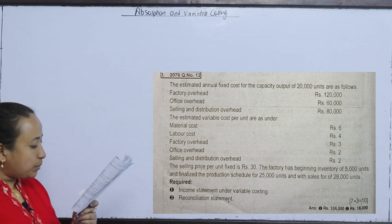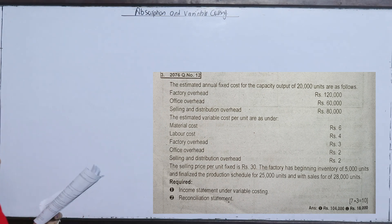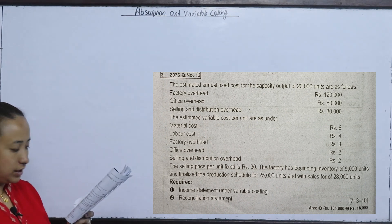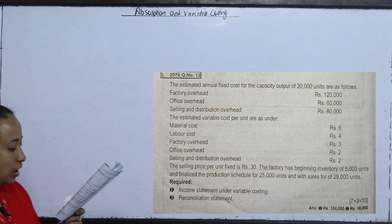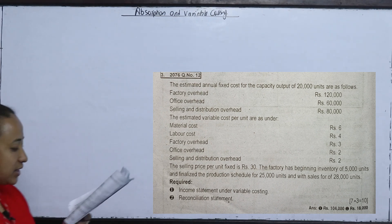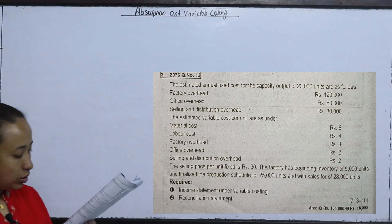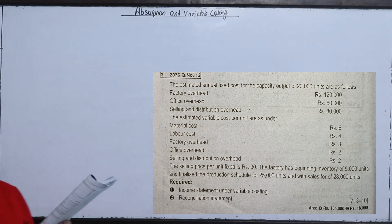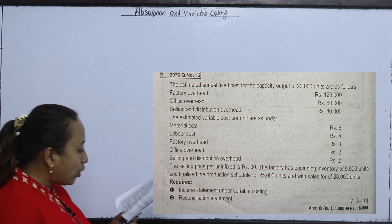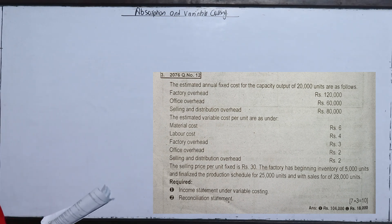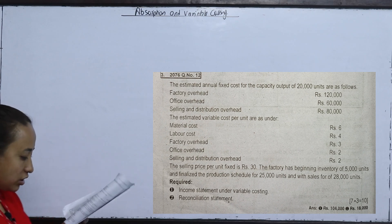The estimated variable cost per unit includes material cost, labor cost, and factory overhead — these form the manufacturing cost. Office overhead and selling and distribution overhead are non-manufacturing variable expenses. The selling price per unit is fixed at Rs. 30.